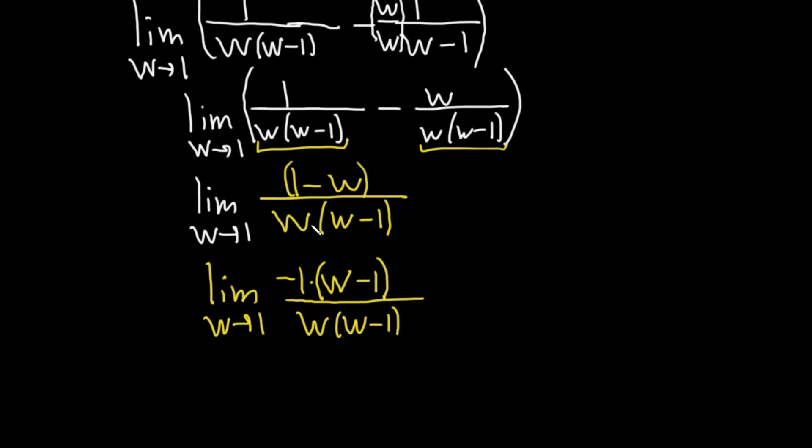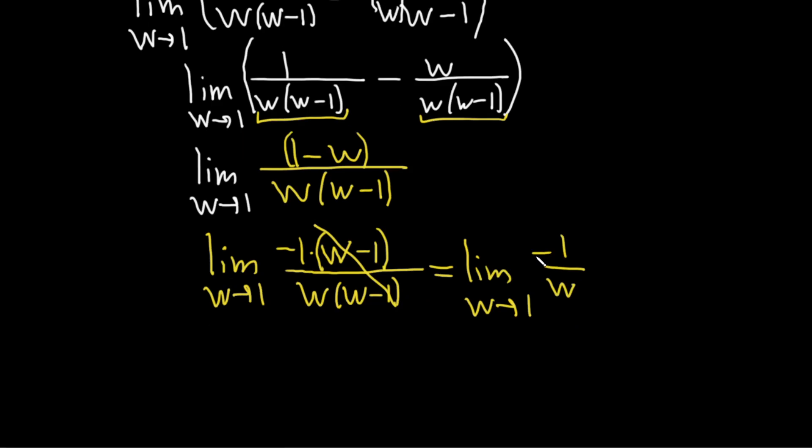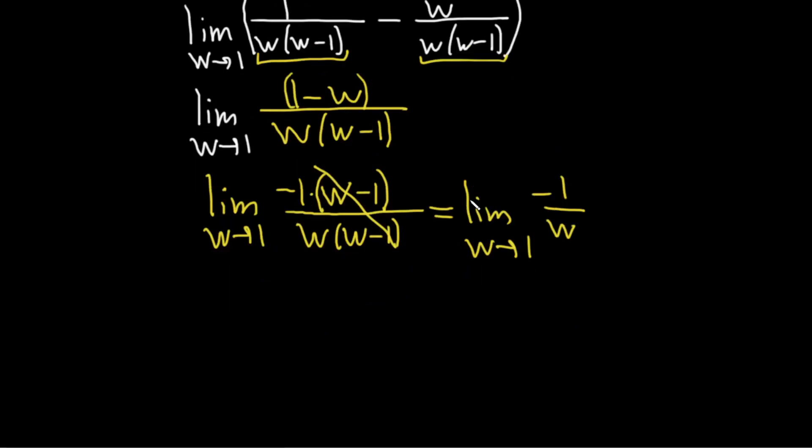And that's exactly what we wanted to do because we wanted them to cancel. So this is the limit as w approaches 1 of negative 1 over w. And now we've reached the point where we can actually evaluate the limit. In other words, we can take this number and plug it in. When we do that, we drop the limit sign. So this is negative 1 over 1, which is simply negative 1. And that would be the final answer.